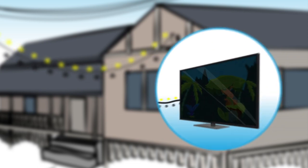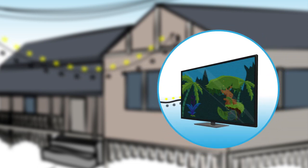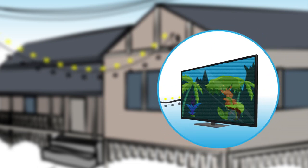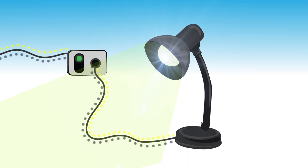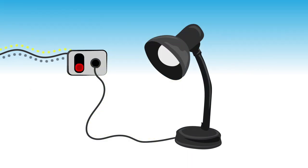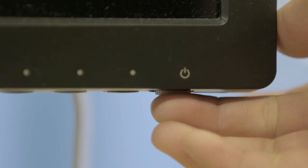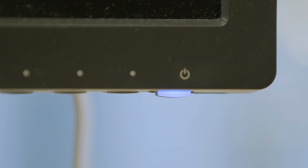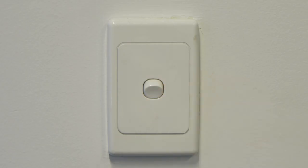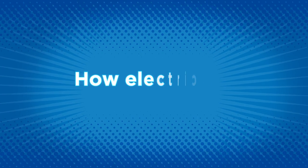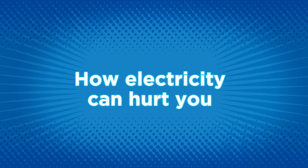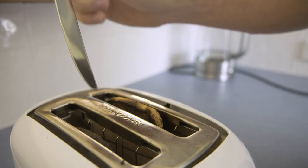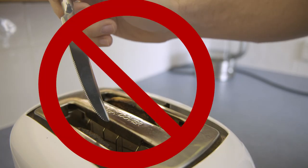There must be a continuous circuit for the electricity to travel through. For an electrical appliance to work, a switch is used to break a circuit so that you can turn electrical appliances and lights on and off.